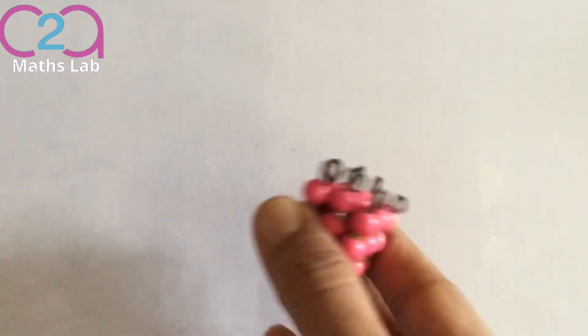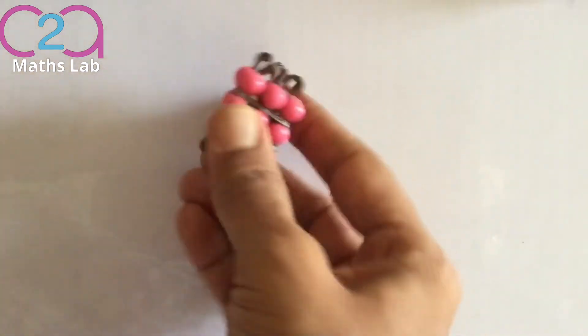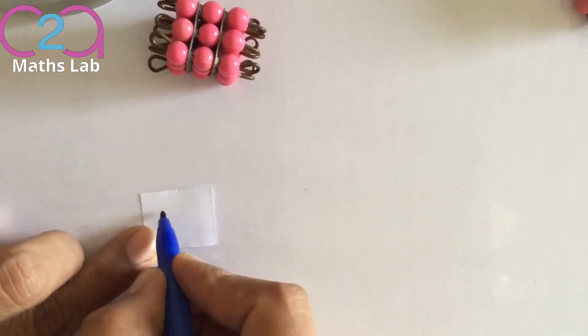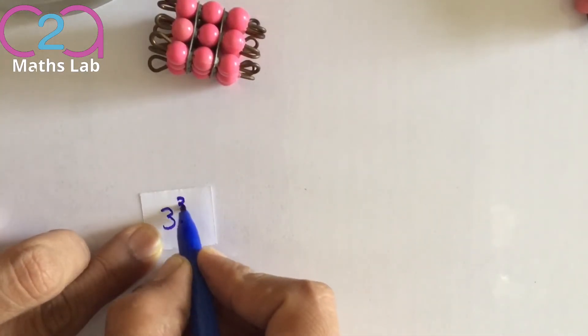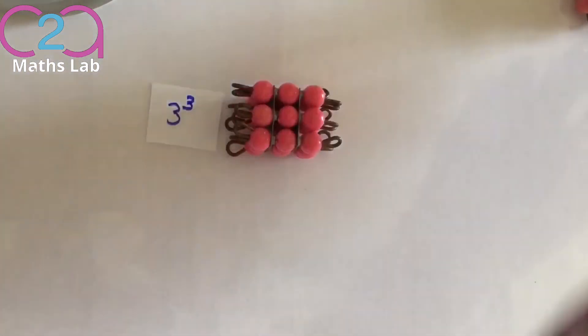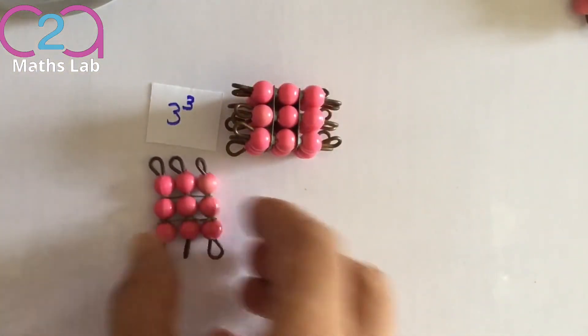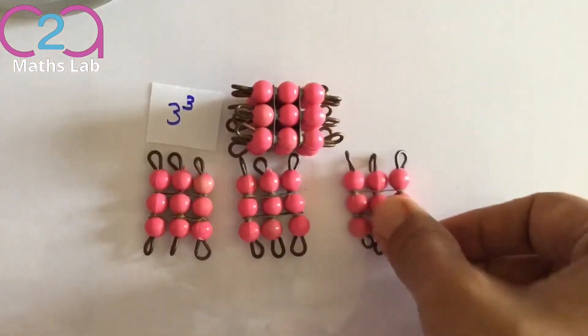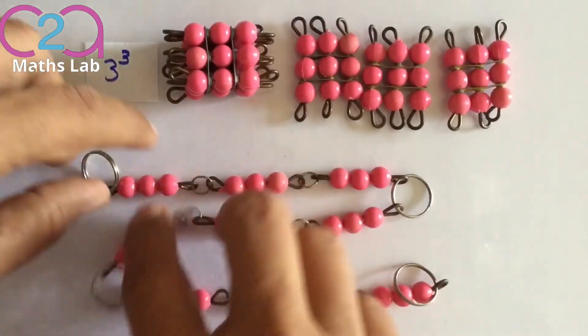So instead of this cube, we will keep this. So this is a cube of 3. So let's see how we can write this. So this is a cube of 3. Now a cube of 3 has 3 squares. This is a cube chain of 3.